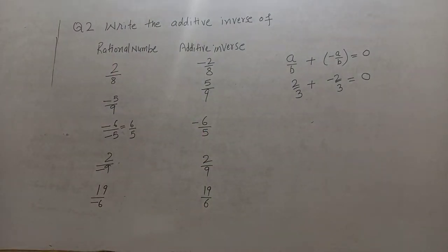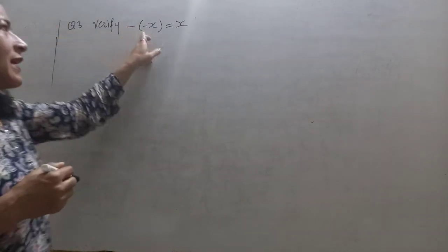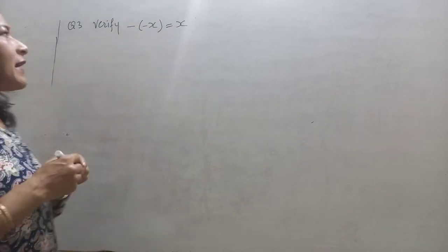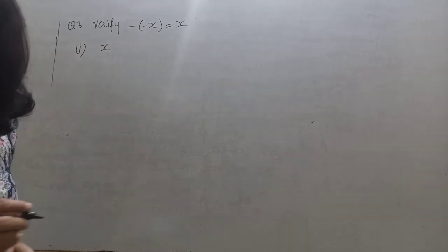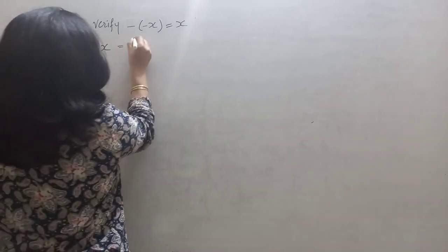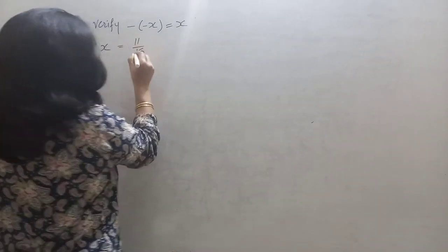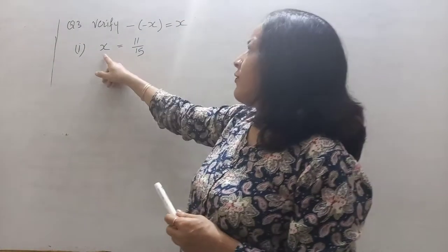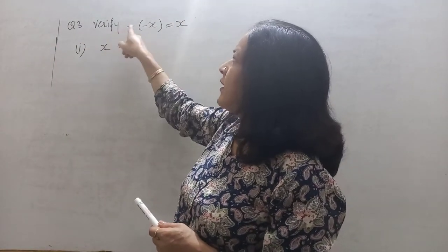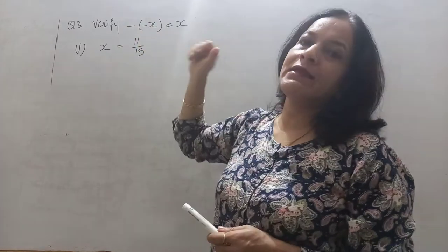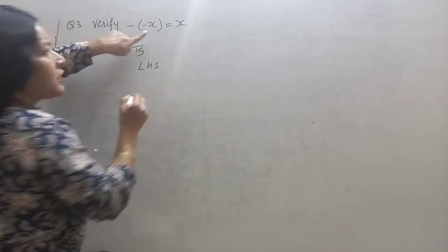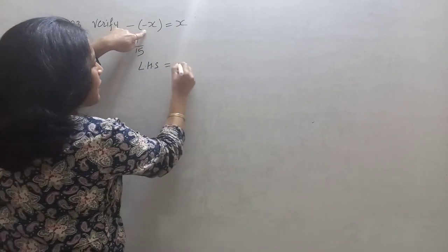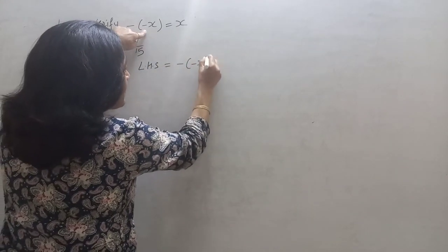Next, question number 3: verify that minus of minus x is equal to x. In the first part, we have been given x equals 11 upon 15. We need to verify this using the left hand side of the equation, which is minus of minus x.